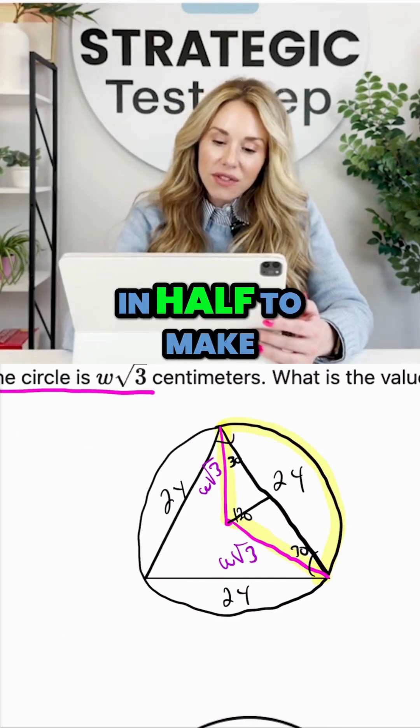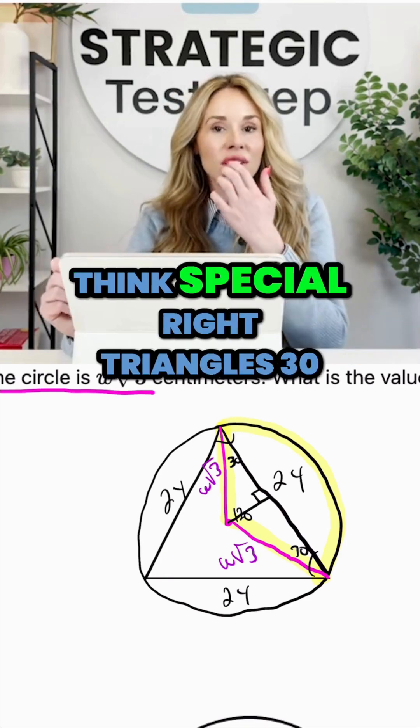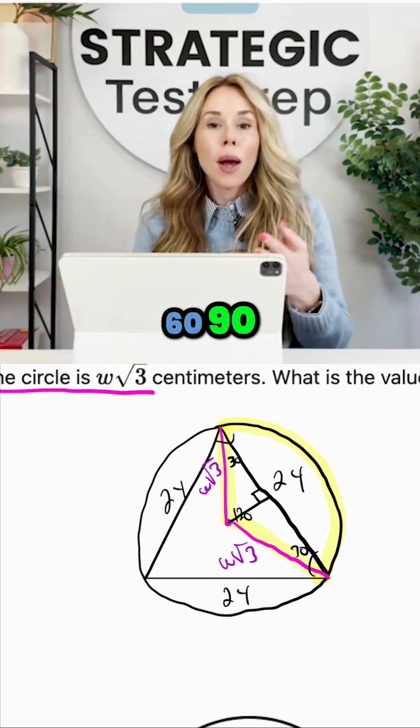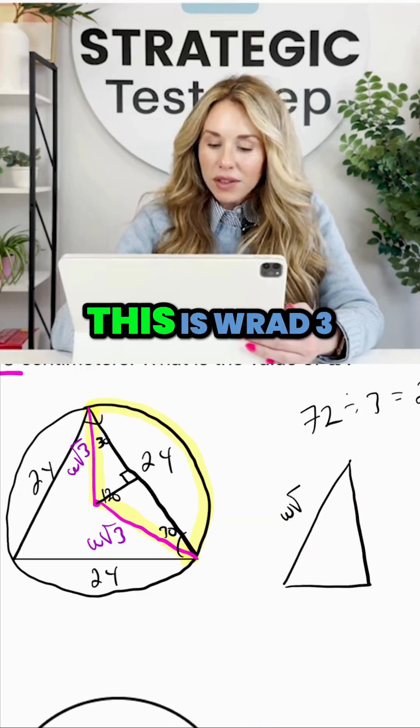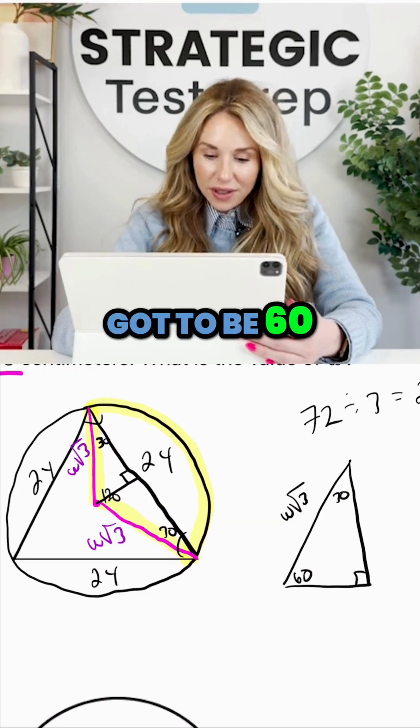What I'm going to do is I'm actually going to divide this in half to make a right angle because I already see a square root of three. I want you to think special right triangles, 30-60-90, because a square root of three is one side of that special right triangle. This is w√3, this is 30, and then this has got to be 60.